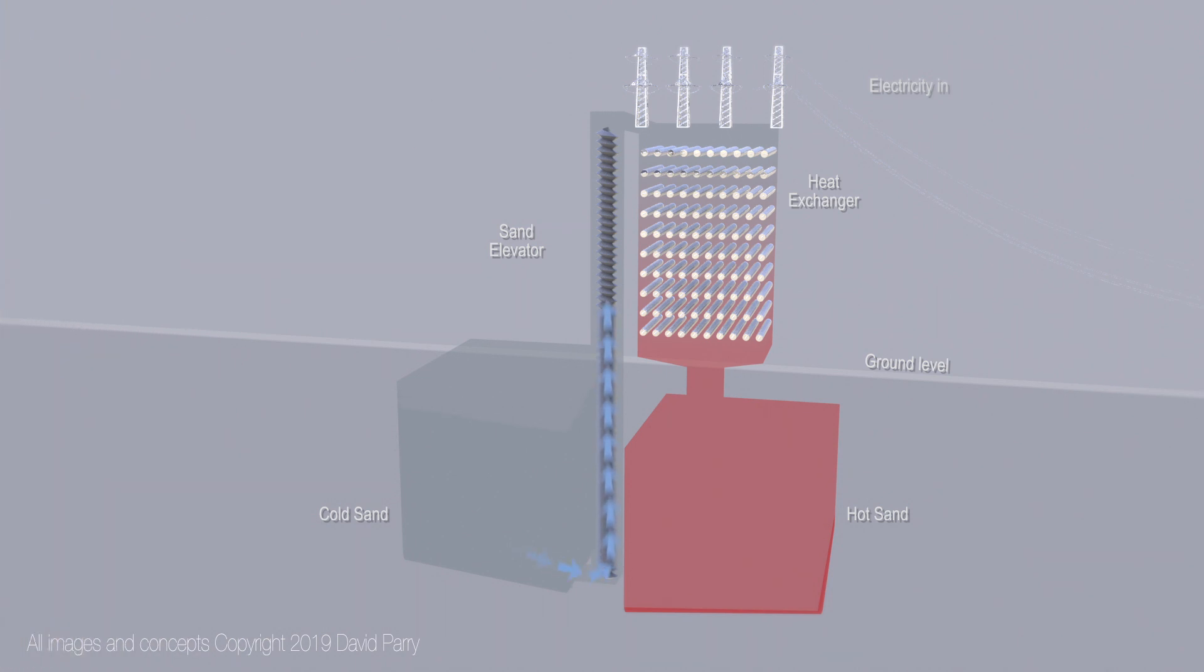Cold sand from a reservoir is lifted into a heat exchange tower and percolated through electrically heated refractory channels, absorbing heat sufficient to reach 600 to 1000 degrees Celsius. Heat control is achieved by regulating sand flow. This is then stored until required.